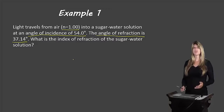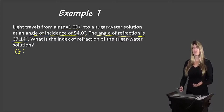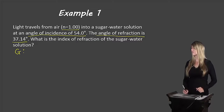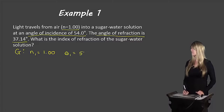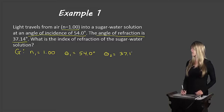Let's use our GRASS method to solve. Starting with our givens: air has an index of refraction of 1.00. Since light travels from air, air is n1 — n1 is always where the light starts — so n1 equals 1.00. The angle of incidence is 54.0 degrees, so theta1 equals 54.0 degrees. The angle of refraction is 37.14 degrees, so theta2 equals 37.14 degrees.